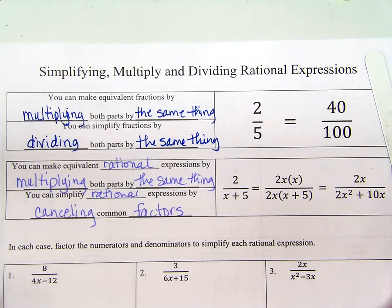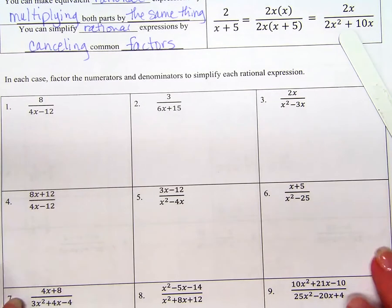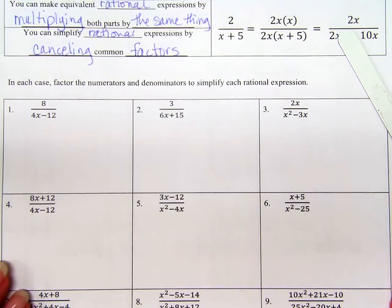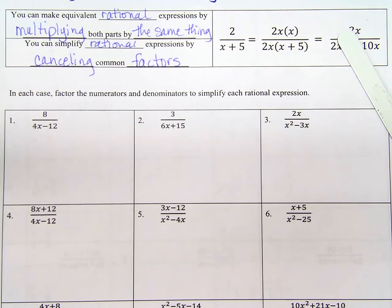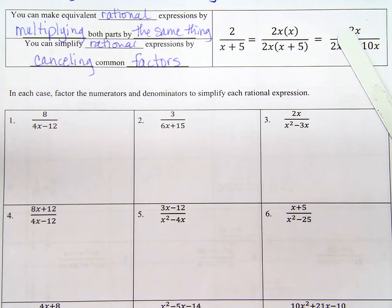Now, notice real quick that this one's a little different. It has a little bit of different words in there. We're okay with that. Okay? You can simplify. What do you think? Rational expressions by? Close.